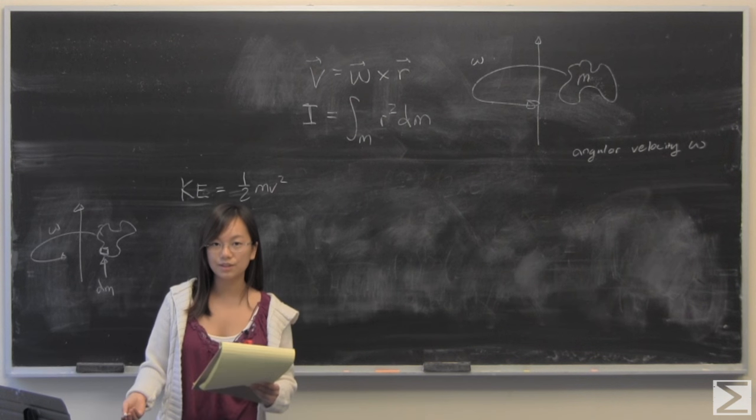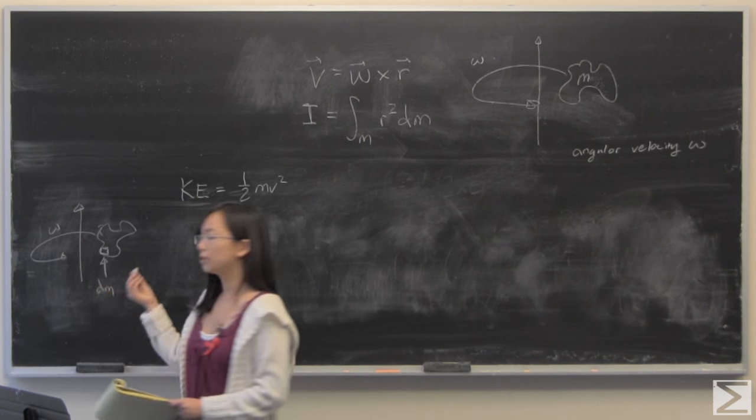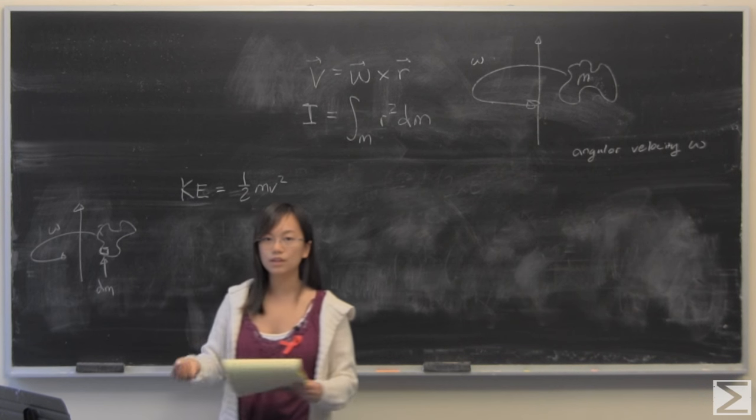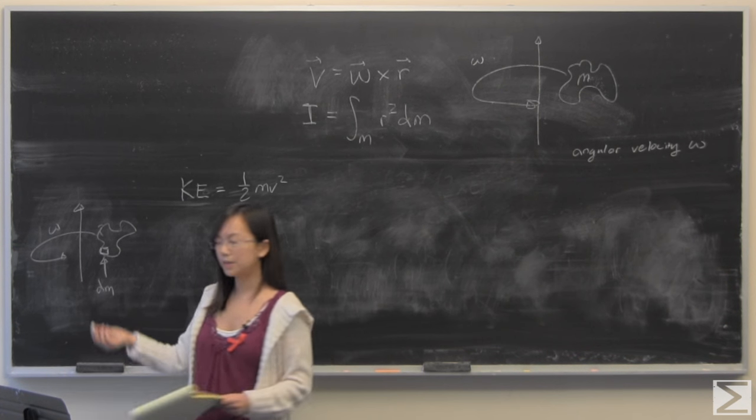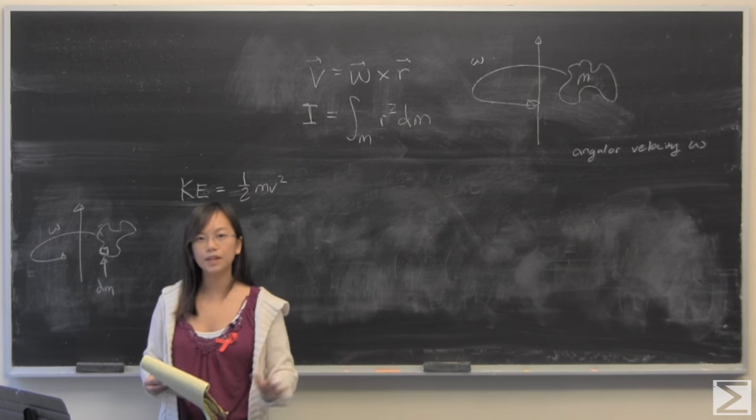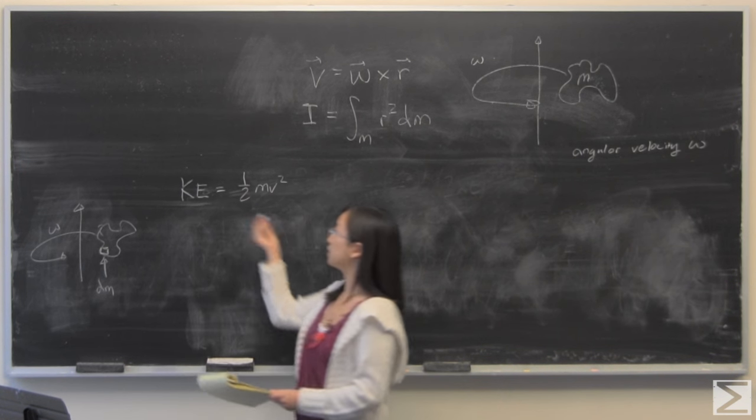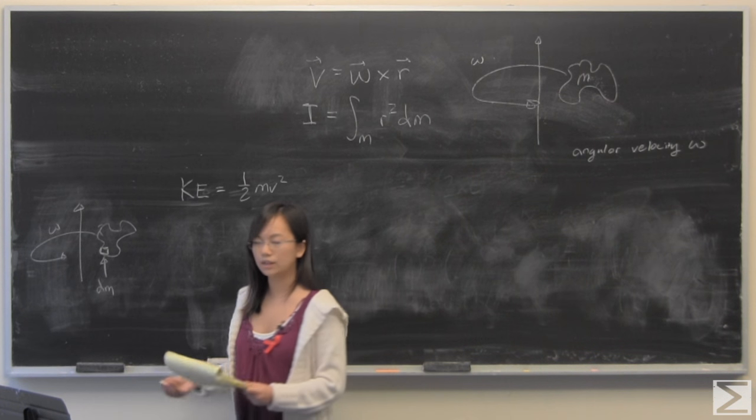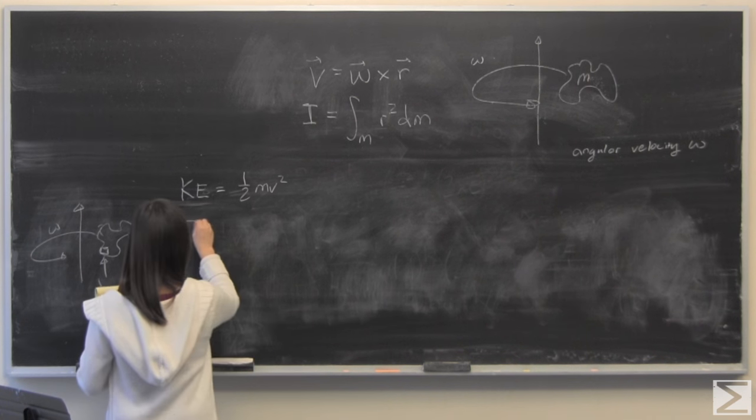The question asks you to start by looking at this mass rotating around an axis with this angular velocity omega. It says to break it up into tiny pieces, little dm pieces, and sum them all up and look at how kinetic energy equals 1/2 mv², what that turns into once we take into consideration vectors.